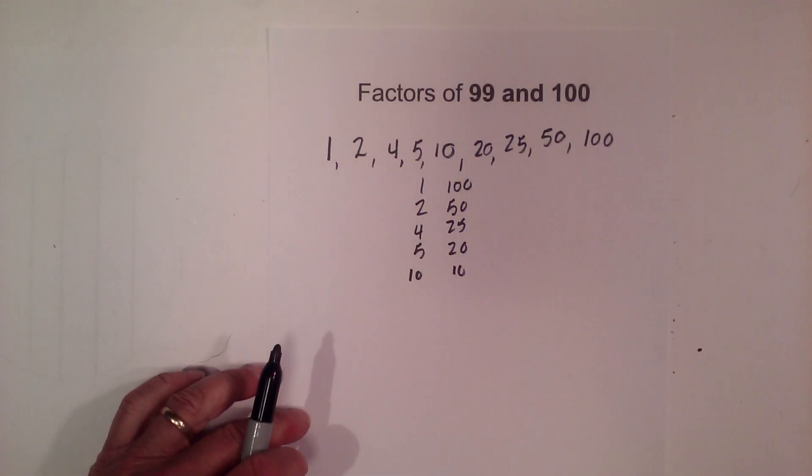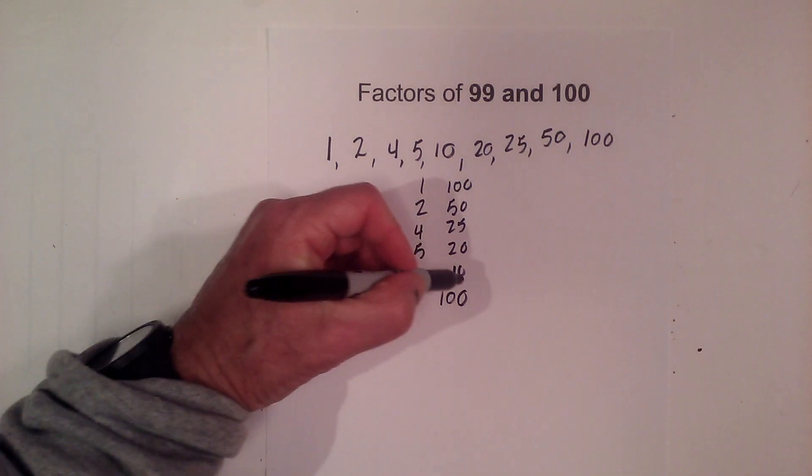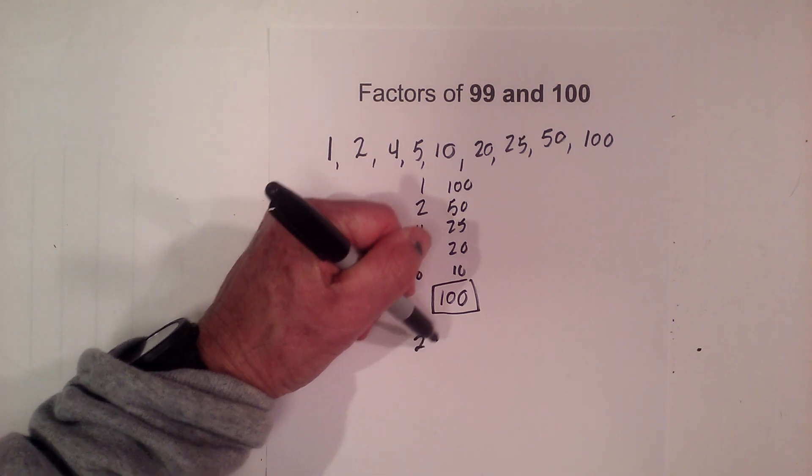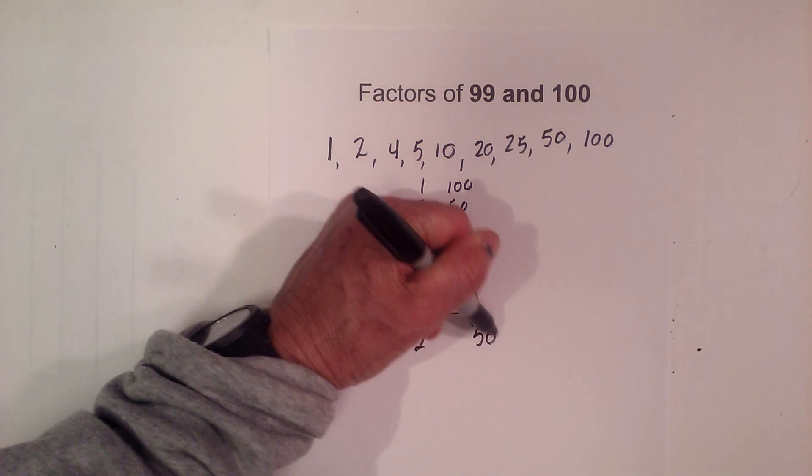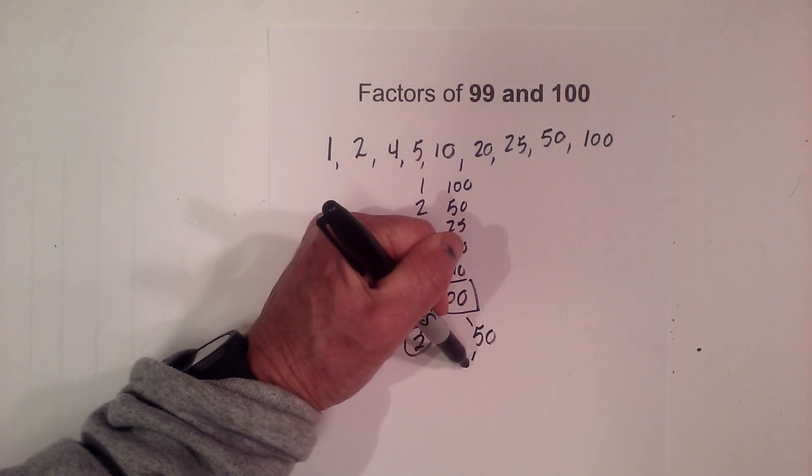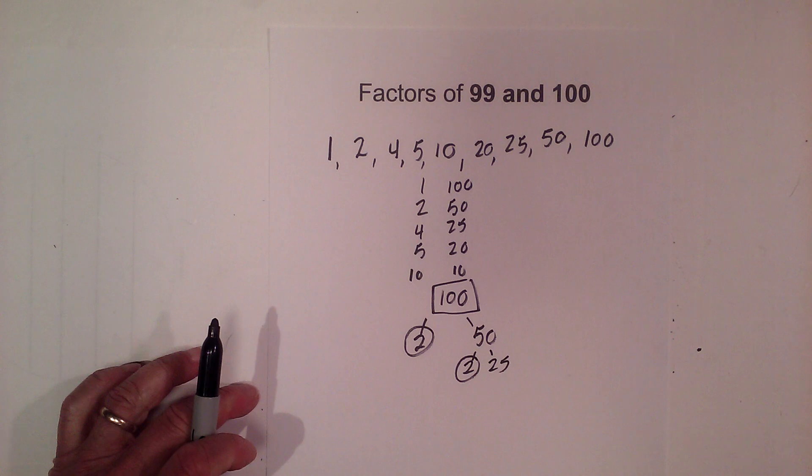Now to find the prime numbers I'll create a factor tree, put a little box around this. I can begin with 2 times 50, circle the 2 because it is prime. Now 2 times 25, circle the 2 because it is prime.